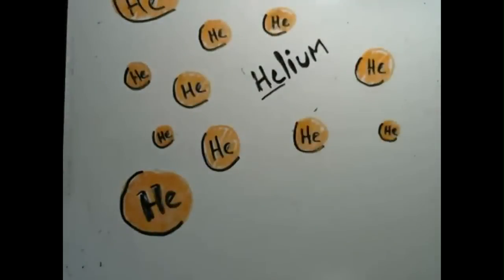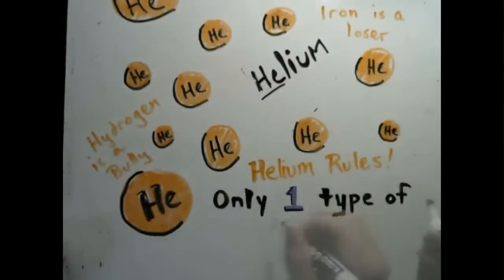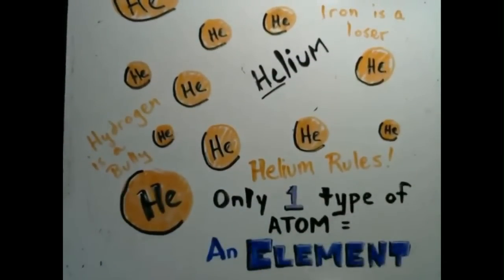Now, what if a bunch of helium came together and decided that they didn't like any other atoms? Well, a group of one kind of atom is called an element.